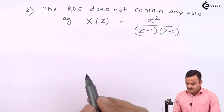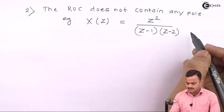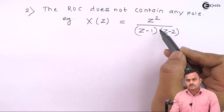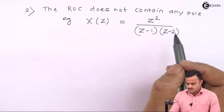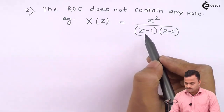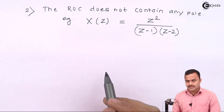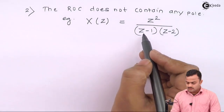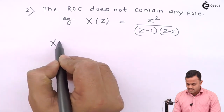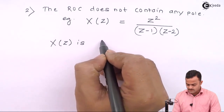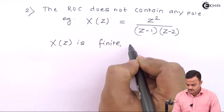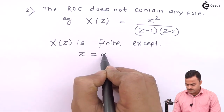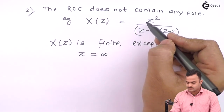This is the Z-transform of some random function x(n). We need to find those values of Z for which this X(z) exists finitely. As discussed in property 1, it consists of circular lines centered about the origin, except for certain values — X(z) is finite except when z equals infinity, because if z equals infinity this tends to infinity.